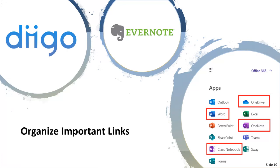If you have links to sources, you could create a Word or OneNote document with a list of hyperlinks to share with students, or use an external tool like Diigo or Evernote. You could also create a class notebook in your NIU Office 365 account to share with students — a great way to involve them by having them share links or resources they find helpful. You can create a collaboration space where both you and students can add and edit content.